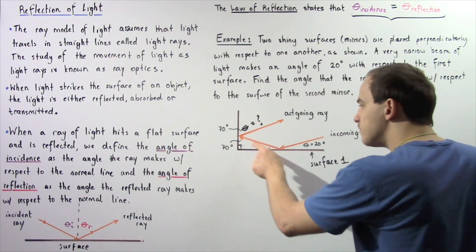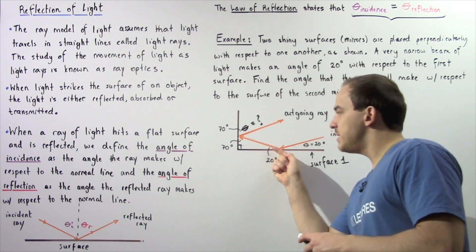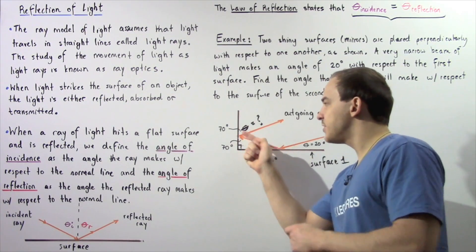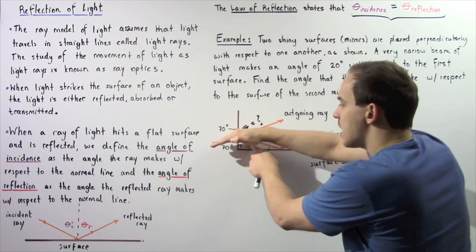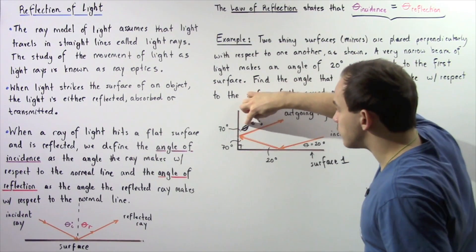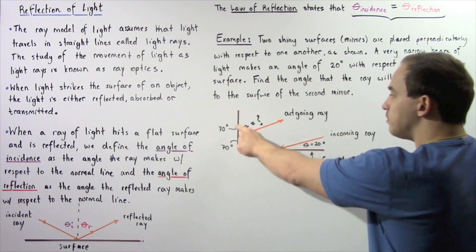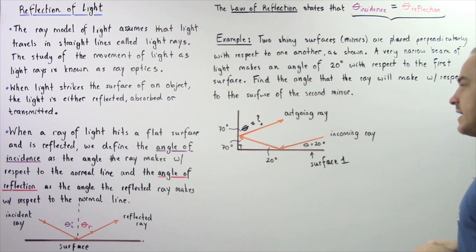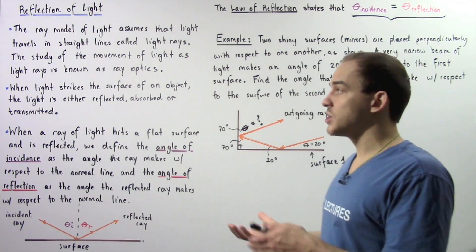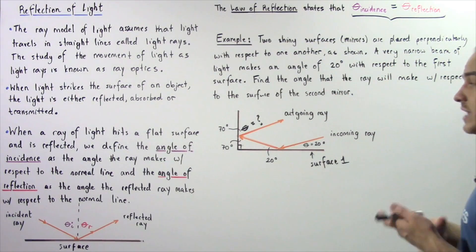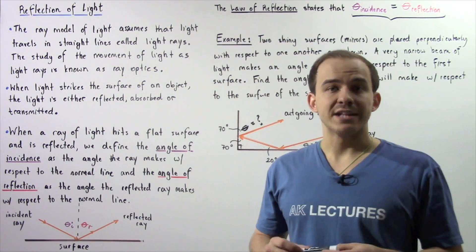Because this is a right triangle and the normal line is perpendicular to the surface, this angle will be 70 degrees. So this first reflected ray becomes the second incoming ray that hits the second surface at an angle of 70 degrees. By the law of reflection, the outgoing ray also reflects at 70 degrees. Therefore, the angle that the light ray makes with the second surface is 70 degrees. The law of reflection is very useful for calculating the geometric angles that a propagating light ray makes when hitting various flat surfaces.